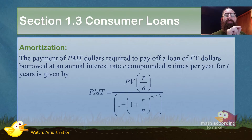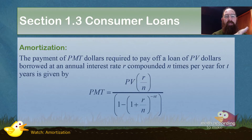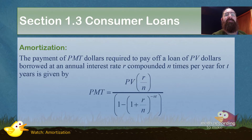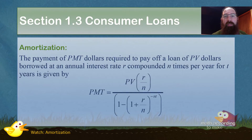Meaning you're making the balance go to zero. So if you're paying off a house or a car, you use amortization to tell you the payment necessary to do so. If you are emptying out your retirement account